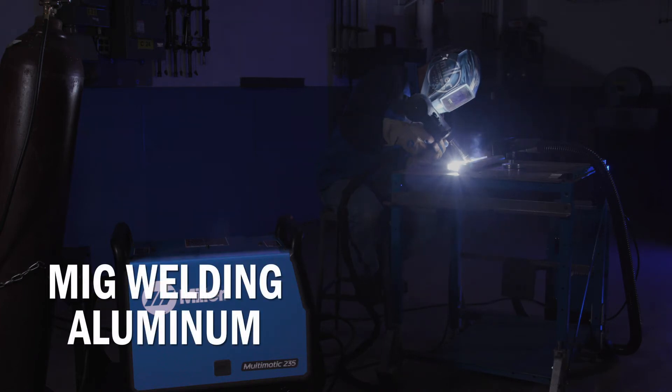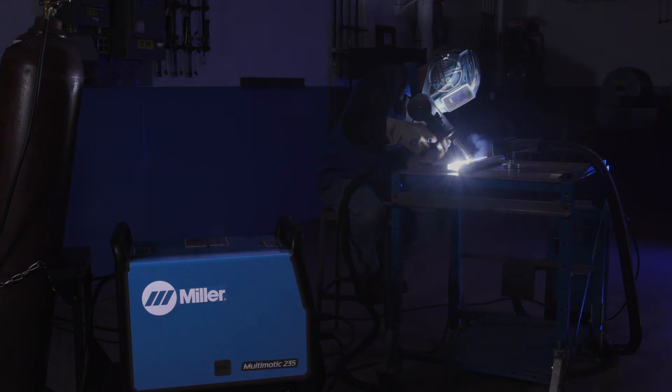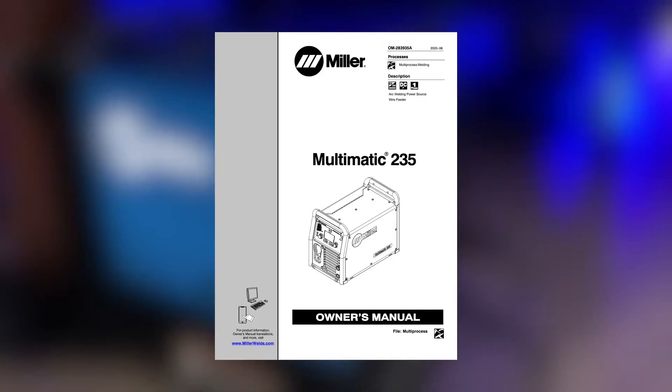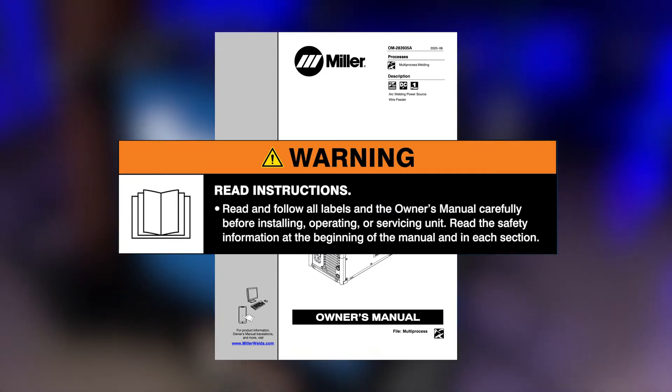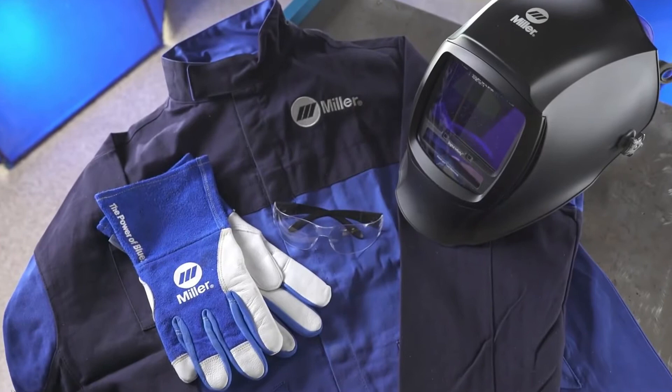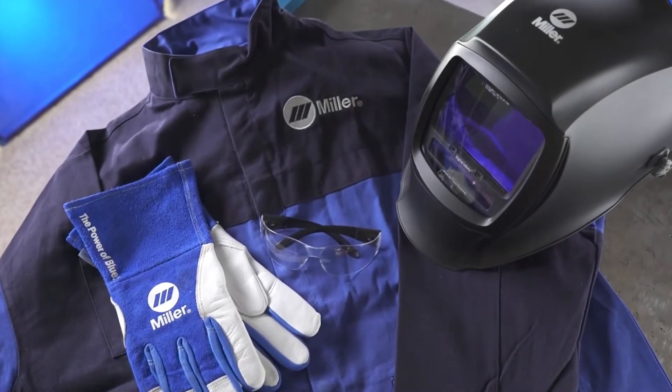Now let's set up the Multimatic 235 for aluminum welding with a Spoolmatic or Spoolmate 200 spool gun. Read and follow all labels and the owner's manual carefully before installing or operating your machine and remember to wear appropriate safety gear during setup and welding.